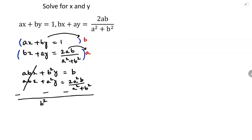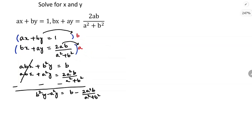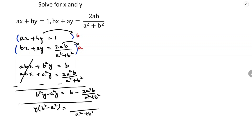So b square y minus a square y equals b minus 2a square b by a square plus b square. Now in these two terms I will take y common. If I take y common: b square minus a square, and the LCM is a square plus b square.